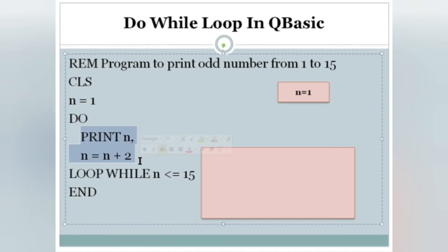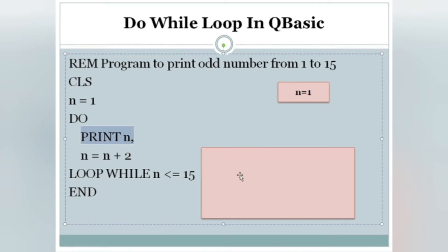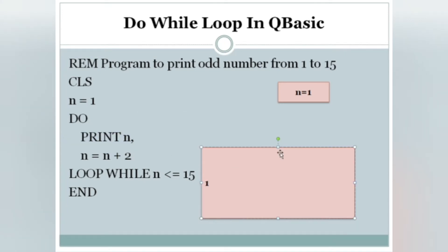This is the body of the do-while loop. When we enter the do-while loop, it will be printed. So first, PRINT N — N equals 1, so 1 is printed. Next line: N equals N plus 2.